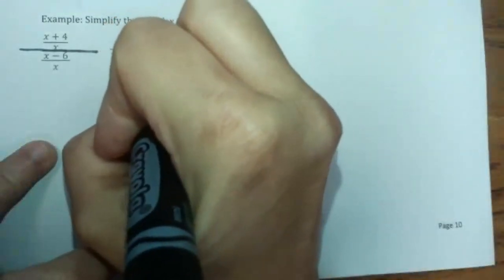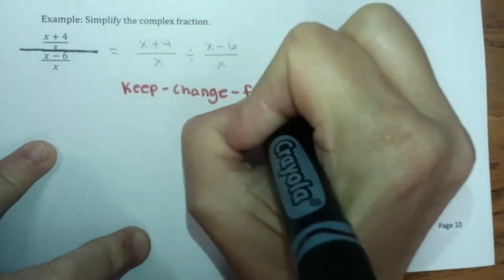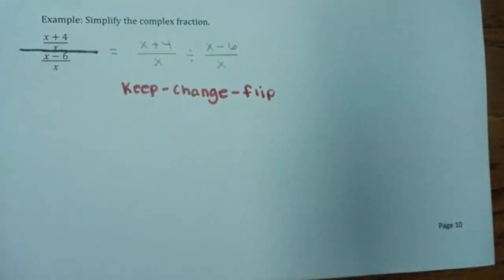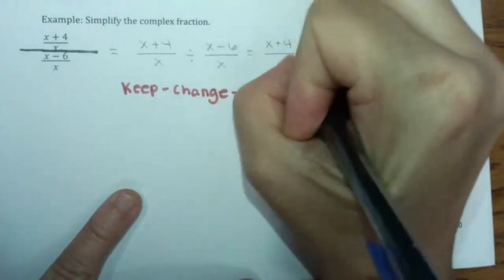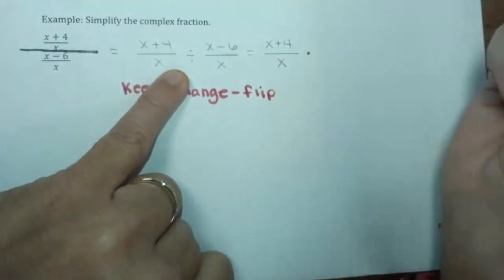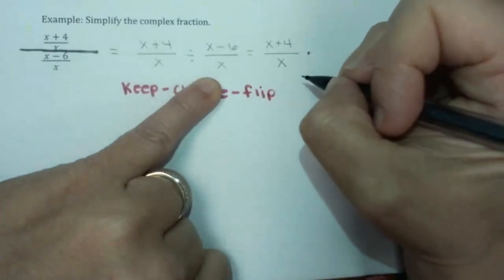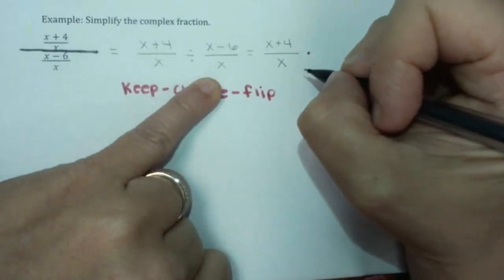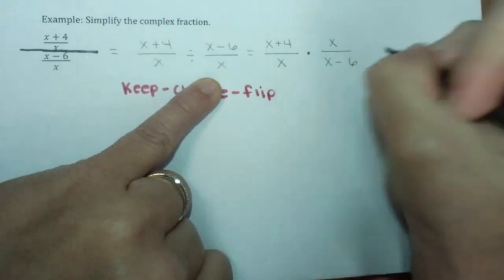Again, we can do keep, change, flip to divide our fractions — or stay, change, flip, or multiply by the reciprocal. They all mean the same thing. We're going to keep the first fraction the same as x plus 4 over x, change our operation from division to multiplication, and flip the last fraction. So x minus 6 over x becomes x over x minus 6.